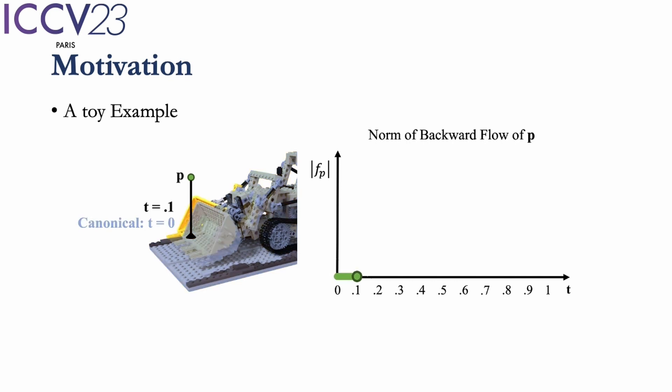When t equals 0.1, it is in the air, which is called an empty point, and if we assume that the empty point is stationary, then the backward flow of point P should be 0. And it is the same when t is 0.2.